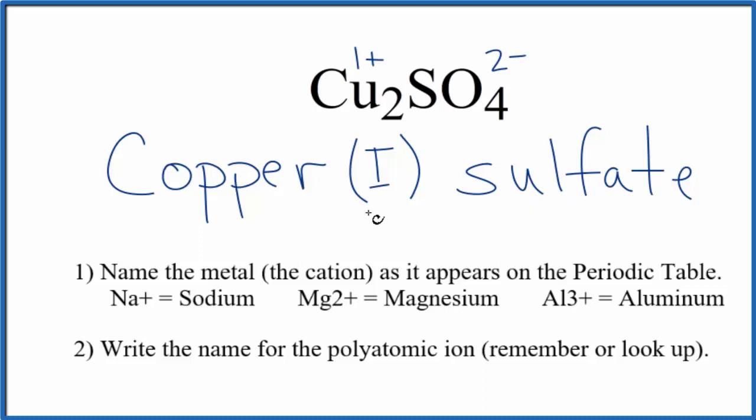If you were given this name here and asked to write the formula, you'd know that each copper is going to have an ionic charge of 1 plus because of this 1 here. And then you know the sulfate, the whole thing, is 2 minus. You'll need two of these 1 plus copper atoms for the whole 1 sulfate ion.